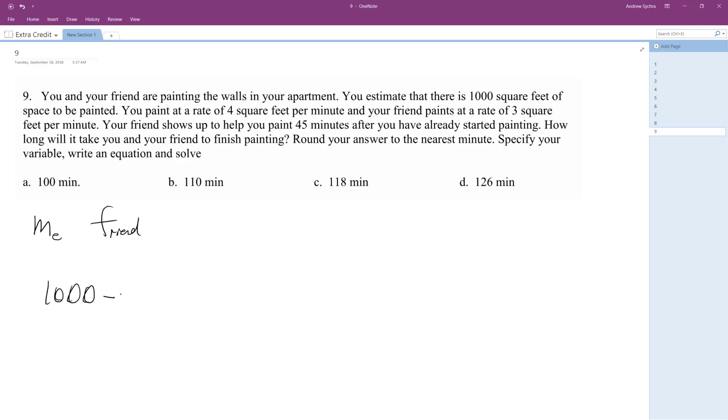And this is initial that you painted by yourself. So 45 times 4 because you painted for 45 minutes, you paint 4 square feet a minute, so that's equal to 180. So 1,000 minus 180, this gives us 820.